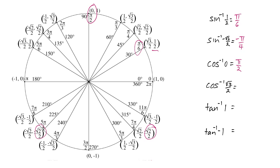How about cosine inverse of the square root of 3 over 2? There's one, and there's another. Now which one do we use? Well, cosine inverse needs to be between 0 and pi. So we're going to use the pi over 6.